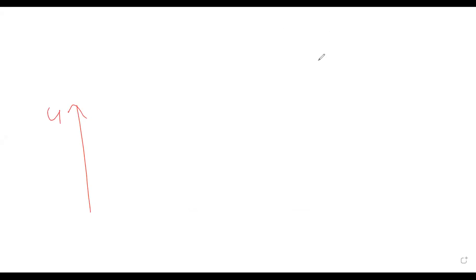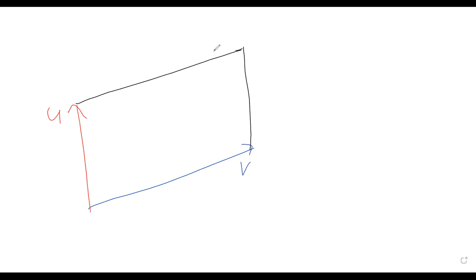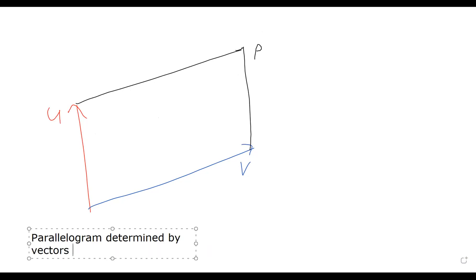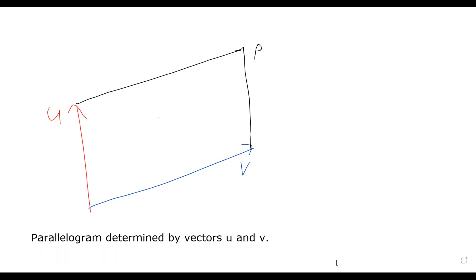If you have a vector u, denoted by this red vector, and a vector v, denoted by this blue vector, then the parallelogram determined by these two vectors is the parallelogram with those two vectors as two of its adjacent sides. Here theta is the angle between vectors u and v.